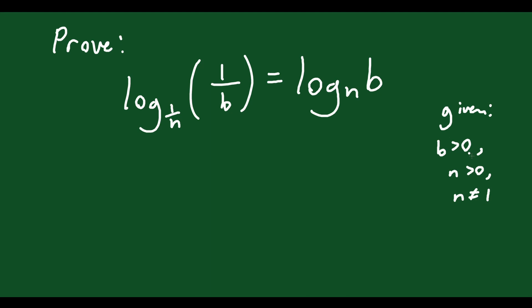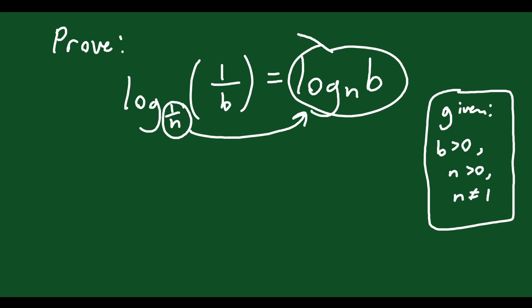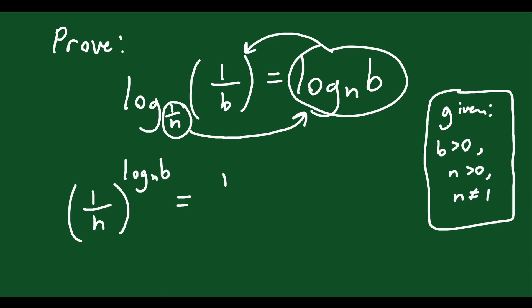We also can't have b less than or equal to 0. But we want to prove this is true. First, I would rewrite it as an exponential: (1/n) to the exponent log_n(b) equals 1/b. That's the starting point. Now, change (1/n) to n to the negative 1, so n^(-1) to the log_n(b) equals 1/b.